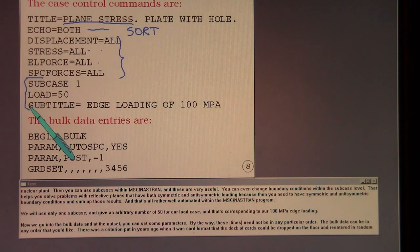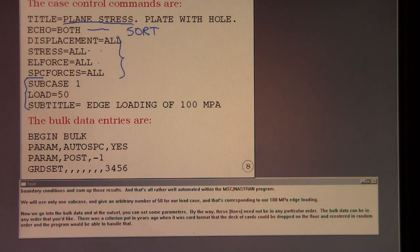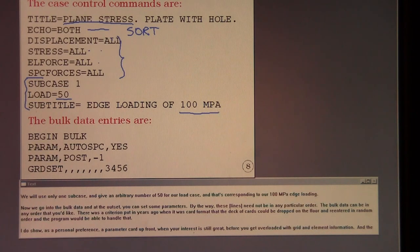Then you can use subcases within NASTRAN, and these are very useful. You can even change boundary conditions within the subcase level. That helps you solve problems with reflective planes that have both symmetric and anti-symmetric loading, because then you need to have symmetric and anti-symmetric boundary conditions and sum up those results. And that's all rather well automated within the MSC NASTRAN program. We will use only one subcase and give an arbitrary number of 50 for our load case, and that's corresponding to our 100 MPa edge loading.